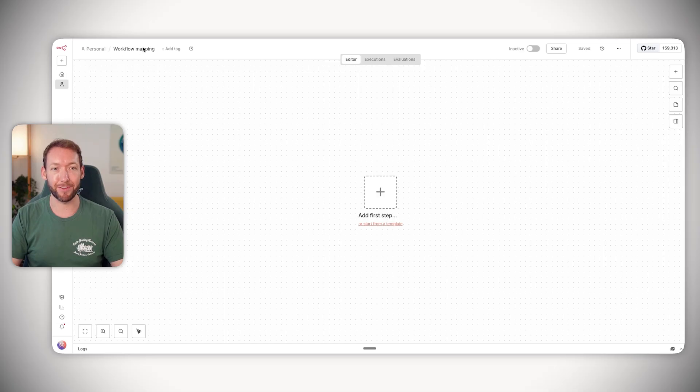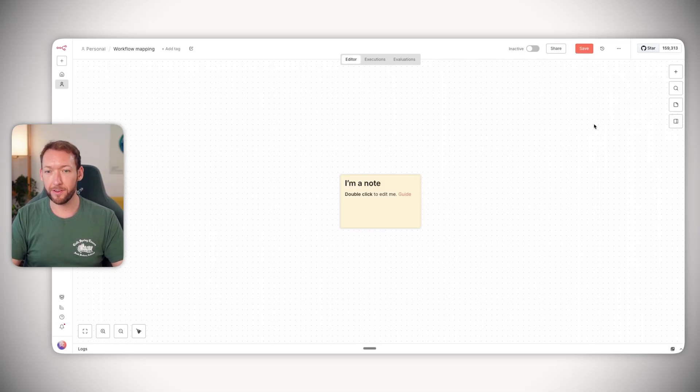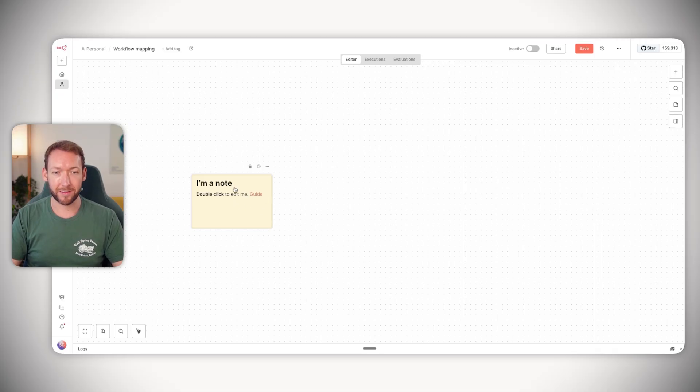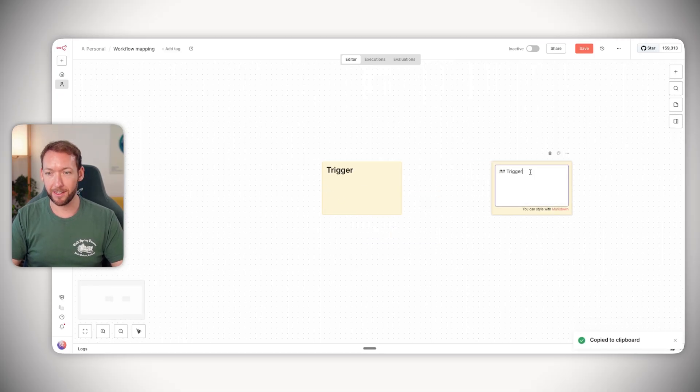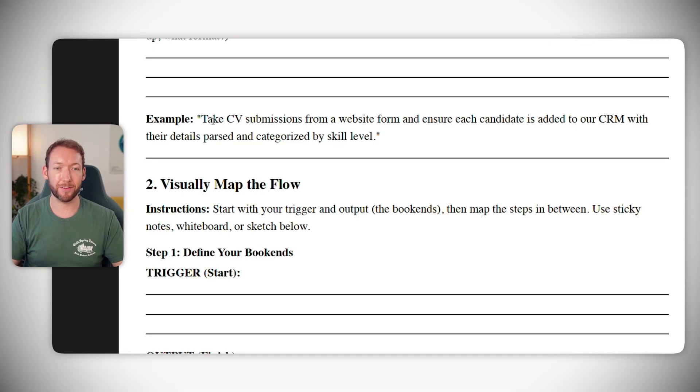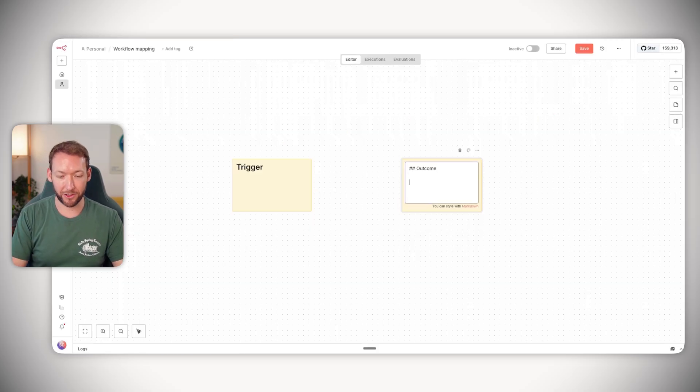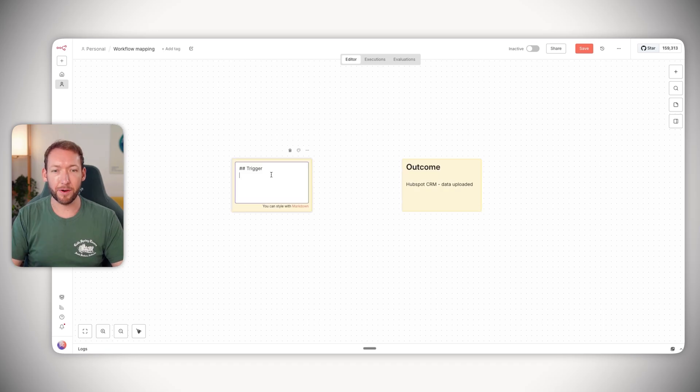So let's go to N8N and we're going to find the trigger and the output of where we want to get to. We're just going to open up a blank canvas here called workflow mapping. And we're just going to use the sticky notes to actually visually draw out the start and the end of the process. So I'll have one for the trigger and one for the outcome. If we remind ourselves of the task, we're taking in CV submissions in a website form, summarizing that information, and then adding it into our CRM. So the outcome is HubSpot CRM data uploaded. And the input here is going to be some sort of submission into our website form or job application.